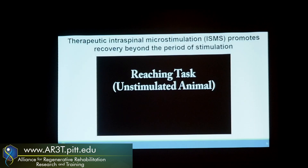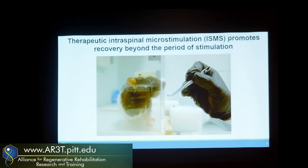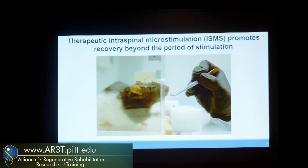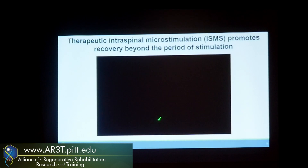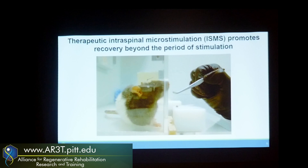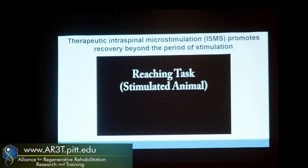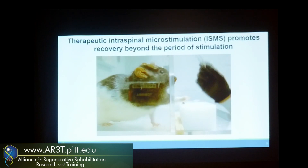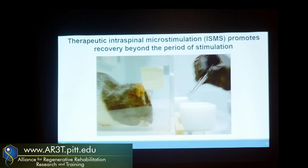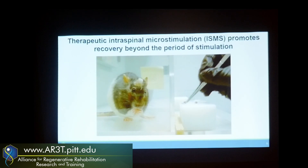What we found was that compared to animals that were not stimulated — still implanted with wires but not stimulated — these animals actually exhibit severe tone and spasticity, as is common in spinal cord injury, and are unable to reach through the plexiglass wall to grasp a food pellet. Animals that were stimulated for 12 weeks, even though the stimulation is not applied during the videos, are able to easily reach out and grasp the food pellet — so less tone, less spasticity, more able to extend the forelimb and reach for food.